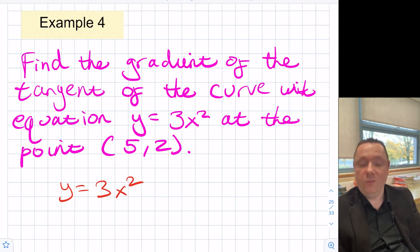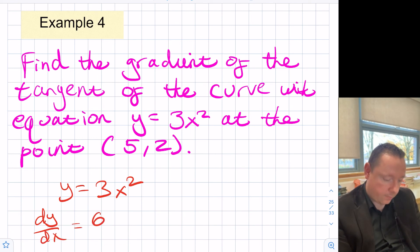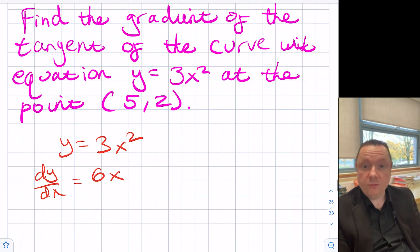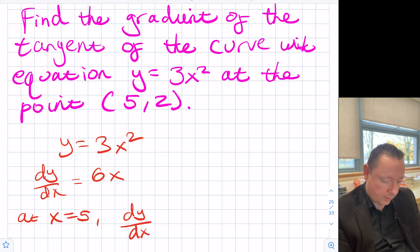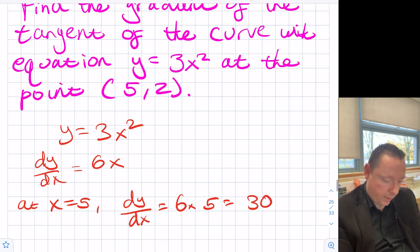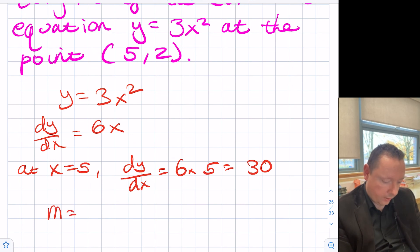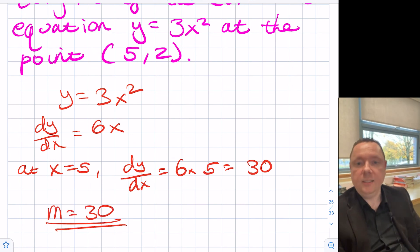So we know that y equals 3x squared. We've got to find the gradient of the tangent. So we do dy by dx, which is equal to 6x. And then we know the point is five two. So at x equal to five, dy by dx equals 6 times 5, which is 30. So our gradient is equal to 30 at the point x equal to five.